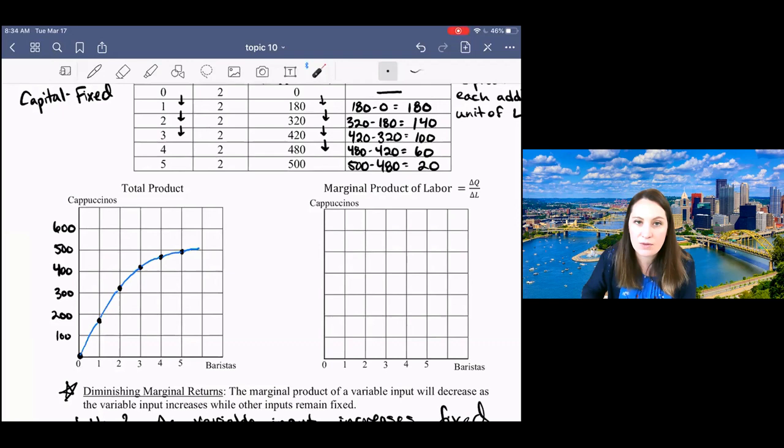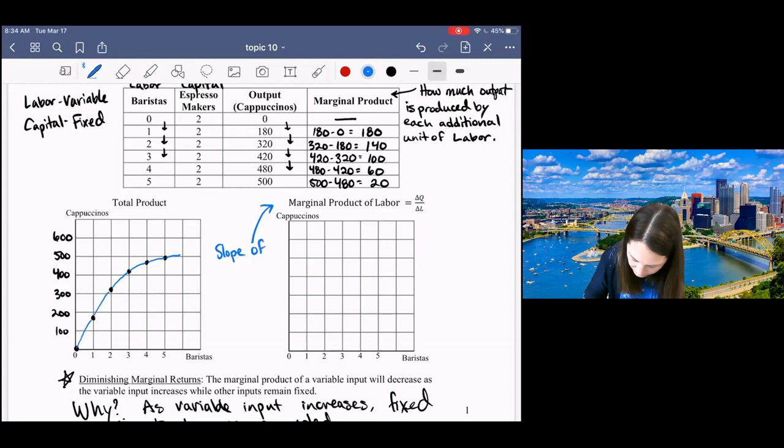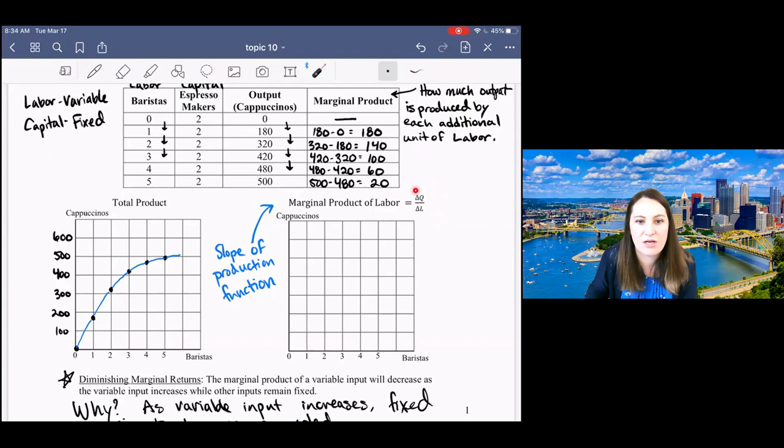If I go ahead and connect these dots, what you've got here is this function that's increasing—as I add more workers, I get more coffee—but it's increasing at a decreasing rate. It's becoming flatter as we go on, the slope is getting smaller. And actually, the marginal product is the slope of the production function. For those of you who've had calculus, you'll recognize this formula, change in quantity over change in our input, could be the derivative.